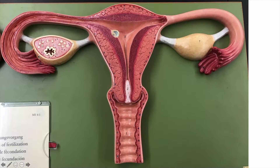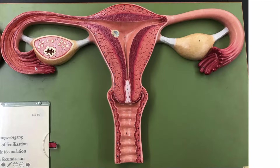The oocyte will then make its way to the fimbriae — these finger-like structures. Then you have the infundibulum, then the ampulla, and then finally the isthmus. Fimbriae, infundibulum, ampulla, and isthmus. Usually fertilization takes place around the ampulla-isthmus junction.